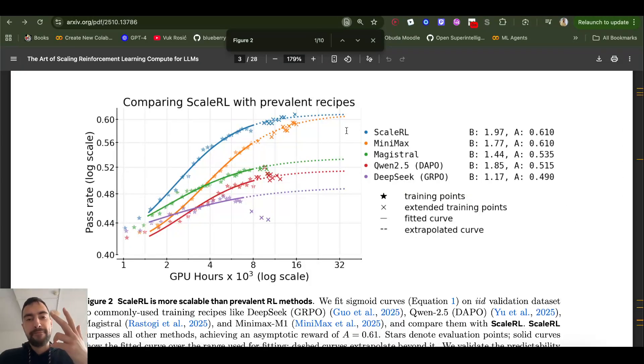And the third thing they found is that many commonly used methods like data curriculum, advantage normalization, and loss aggregation actually just help the model train faster, reach the ceiling faster. But they don't lift the ceiling. Just reach it faster.